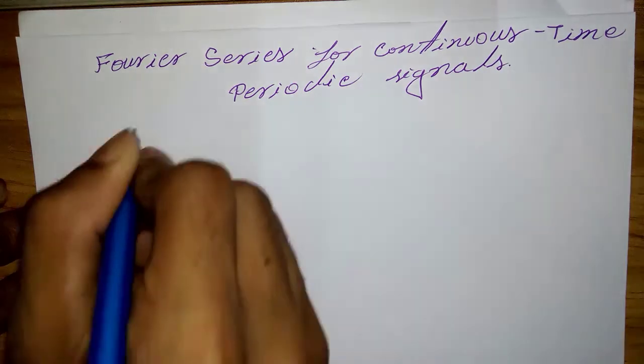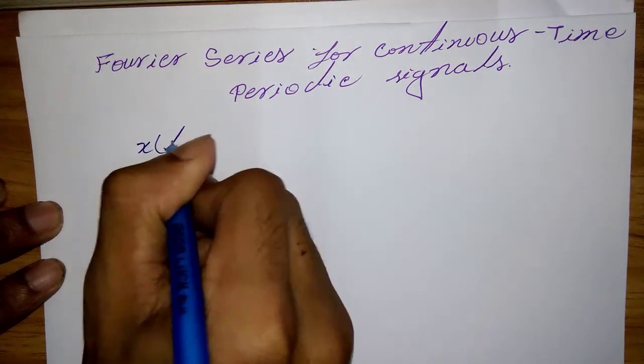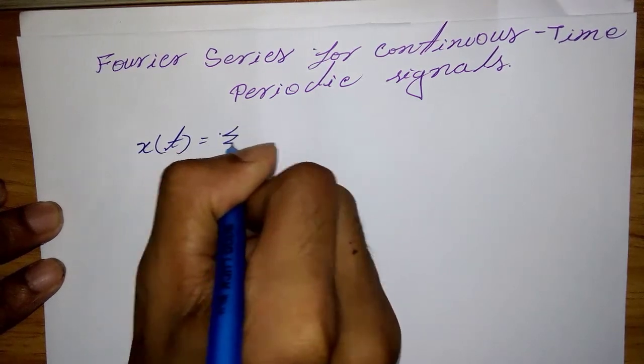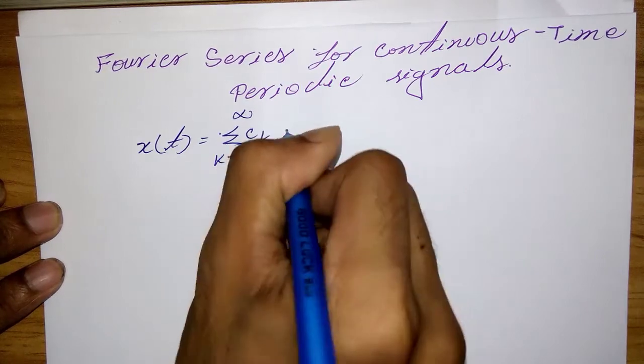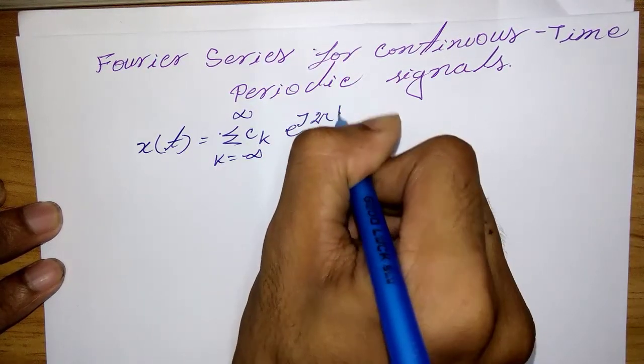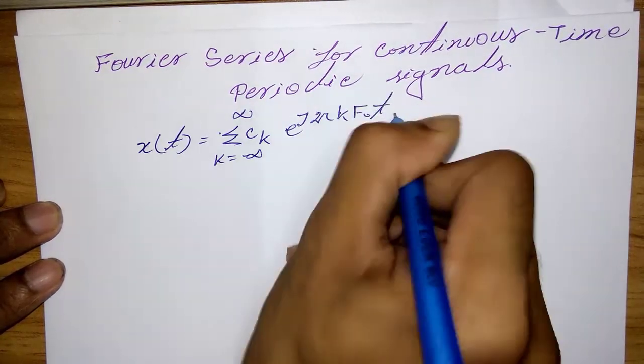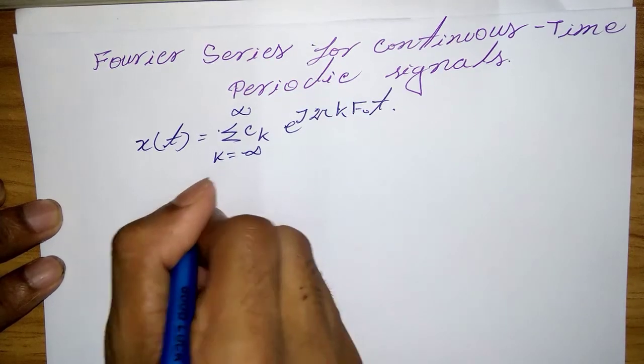takes the form x(t) = Σ(k=-∞ to ∞) C_k e^(j2πkf₀t). For a periodic signal with fundamental period, we know that T_p = 1/f₀. Hence, we can think of the exponential signal e^(j2πkf₀t)...